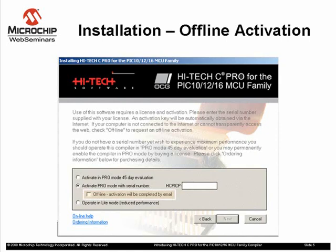If an internet connection is not possible, then you can perform the activation offline. To do this, click the Offline checkbox. This will create a file which you can then copy to another machine and email to HI-TECH Software using the email address specified by the activation program. You will be sent an activation response file that you can use to activate the compiler. You must generate this file on the machine that is to run the compiler, as the file will be linked to that specific machine.